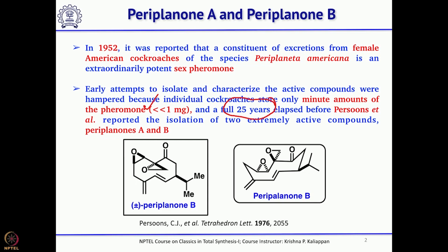Looking at their structures: Periplanone A is a little bit complex. It has two epoxides, two double bonds, one carbonyl group, and one isopropyl group.